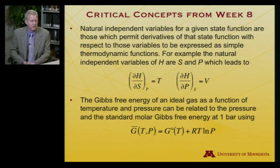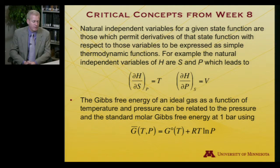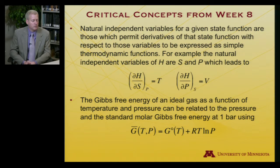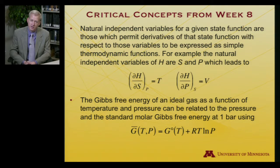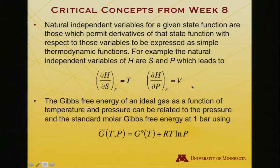Natural independent variables for a given state function are those which permit derivatives of that state function with respect to those variables to be expressed as simple thermodynamic functions. For example, the natural independent variables of H are S and P, which leads to the partial derivative of H with respect to S at constant pressure equals temperature, and the partial derivative of H with respect to pressure at constant entropy equals volume — simple thermodynamic variables.